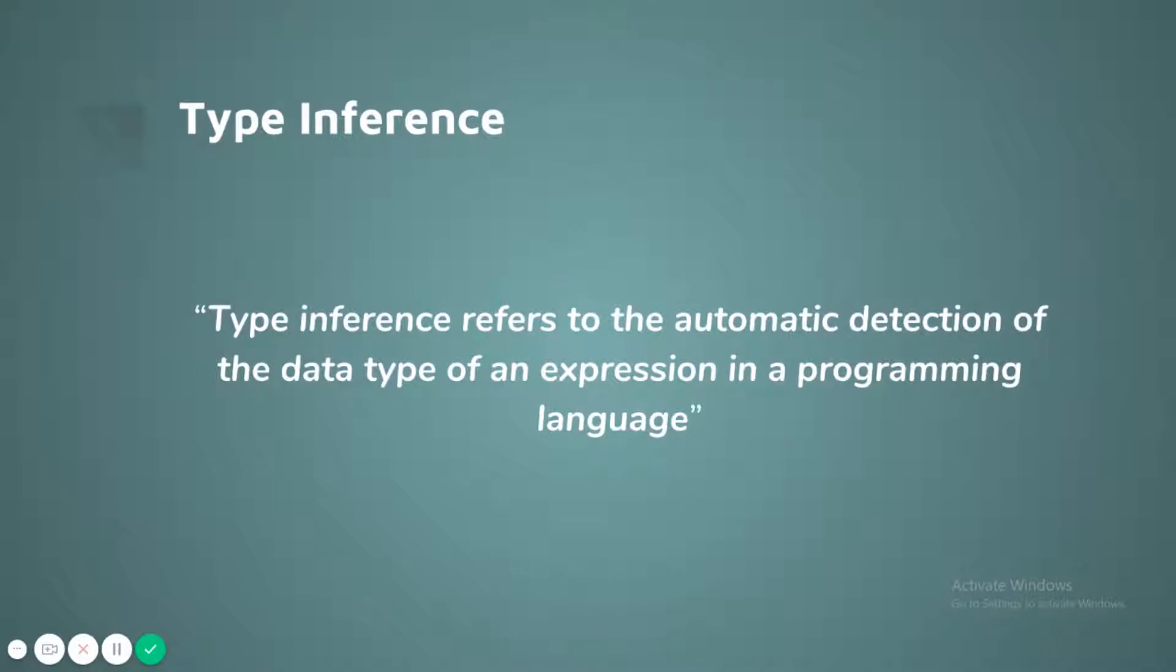As programmers, we often come across a concept called Type Inference. To begin with, let me clarify that Type Inference is not something unique to Scala. There are many other languages like Haskell, Rust, and C Sharp that have this language feature. By definition, Type Inference refers to the automatic detection of data types of an expression in a programming language. Let us see this using a code example.